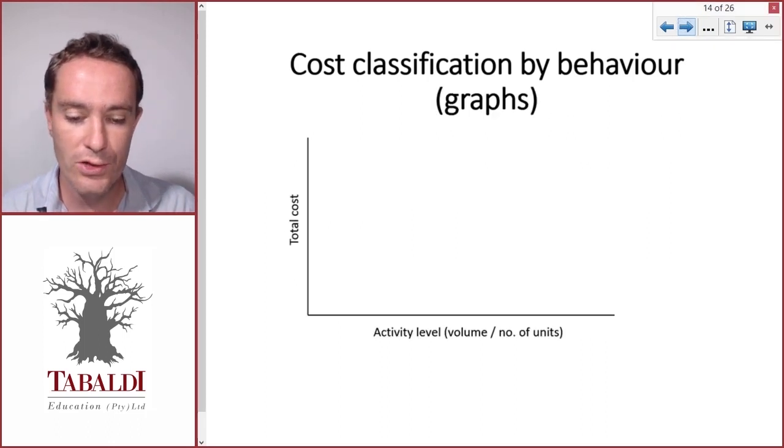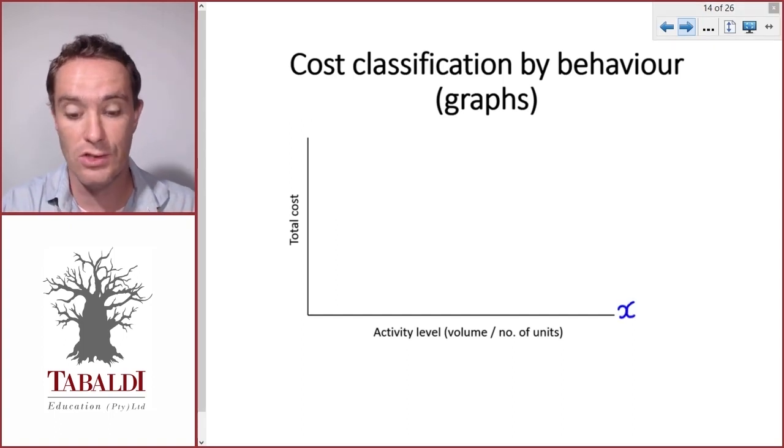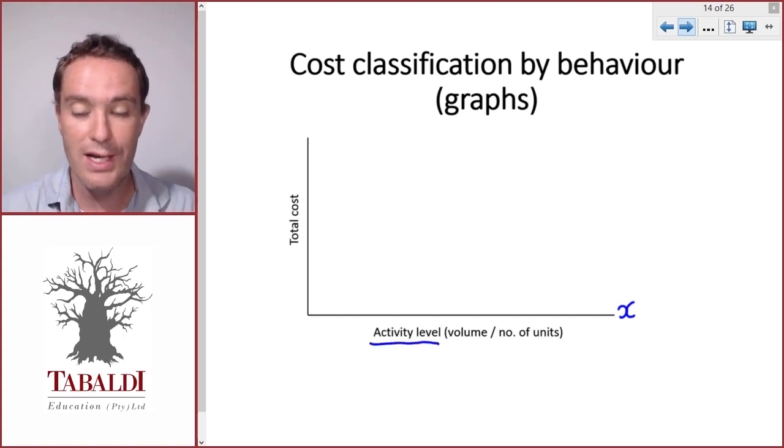So, before we do that, we'll have to be comfortable with what this graph represents. We'll explain all of the cost behaviors by way of this graph. The first axis we'll look at is the X axis. So, that's the horizontal axis. And that represents our activity level or the number of units.